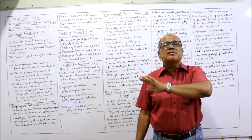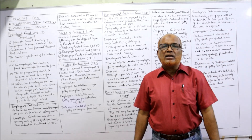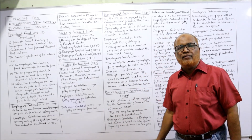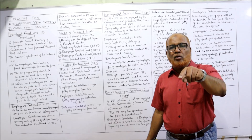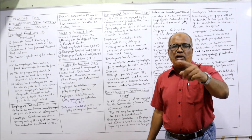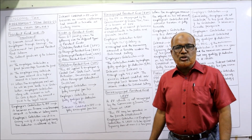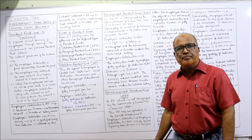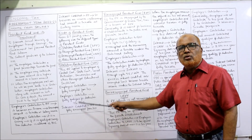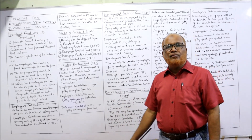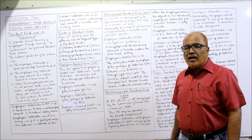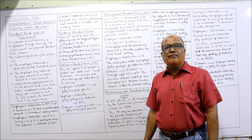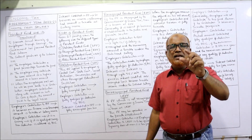Interest credited in SPF is fully exempted from tax — whatever interest is credited in the statutory provident fund is completely tax free. To summarize for SPF: employer's contribution is tax free, employee's contribution qualifies for deduction under Section 80C, and interest credited is fully tax free.